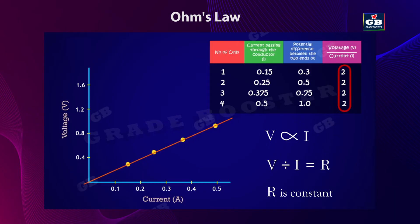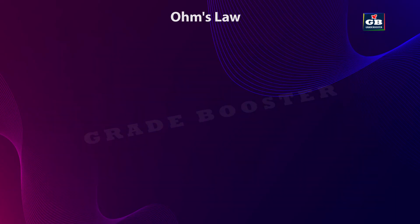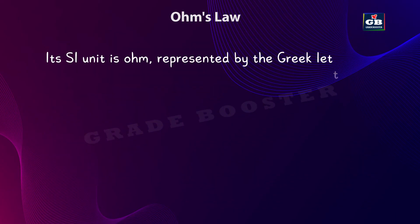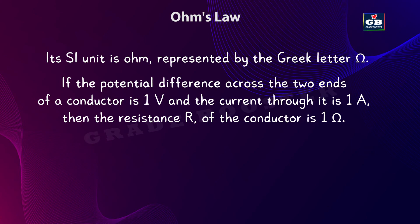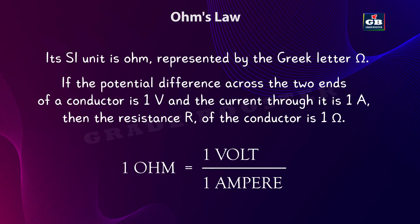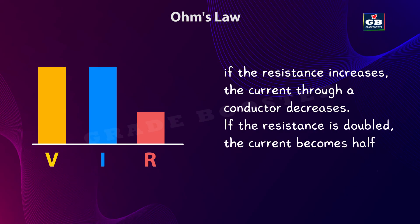Now, let us know some more details about resistance. The SI unit of resistance is Ohm, represented by the Greek letter Omega. If the potential difference across two ends of a conductor is 1 volt and the current through it is 1 ampere, then the resistance R of the conductor will be 1 ohm — that is, 1 ohm equals 1 volt by 1 ampere. If the resistance increases, the current passing through the conductor decreases. If the resistance is doubled, the current becomes half.